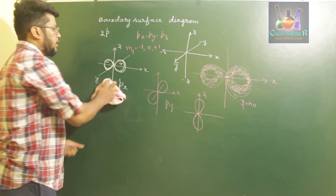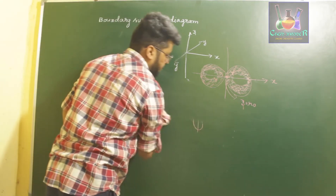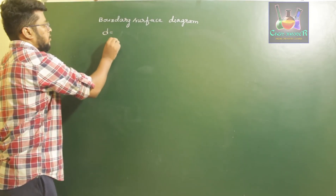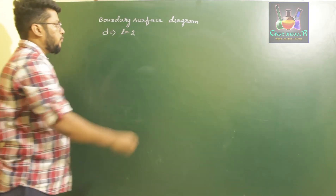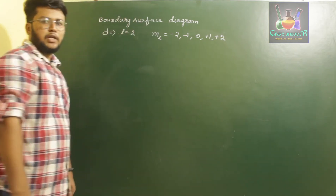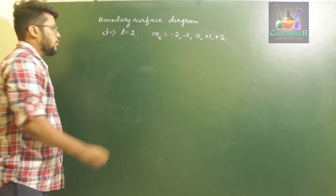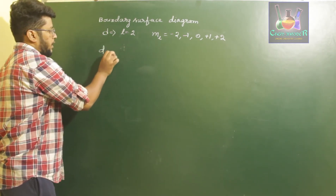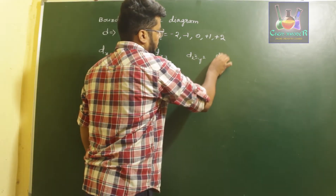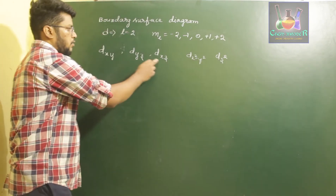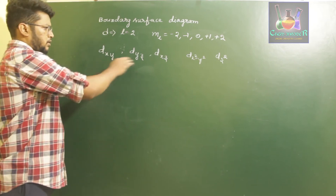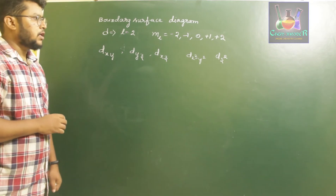Next is the boundary surface diagram of the d orbital. For l equal to 2, the magnetic quantum number ml can be minus 2, minus 1, 0, plus 1, and plus 2, giving us five d orbitals. Those five d orbitals are dxy, dyz, dxz, dx-squared-minus-y-squared, and dz-squared. All five d orbitals have the same energy — they are degenerate.